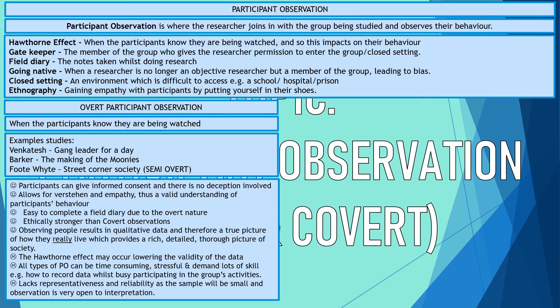The downsides are that you're more likely to experience the Hawthorne effect — people know they're being watched and will change their behavior. All types of participant observation can be time consuming, adding to cost and stress. There is also a lack of representativeness and reliability: the sample will be relatively small and the experiences quite unique to the situation, making it difficult to repeat.